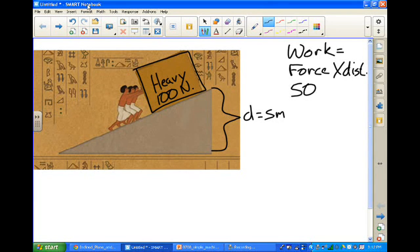So they needed to take 100 times 5, which is 500, and the unit for work is joules. So it's 500 newton meters or 500 joules. That's how much work they had to do.